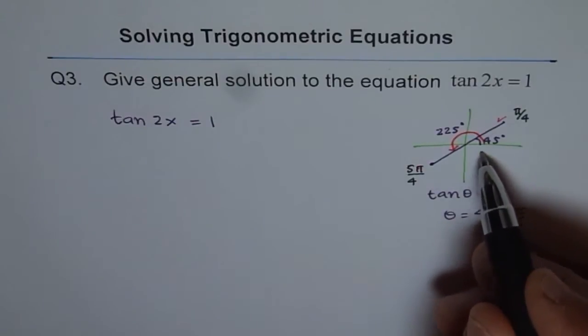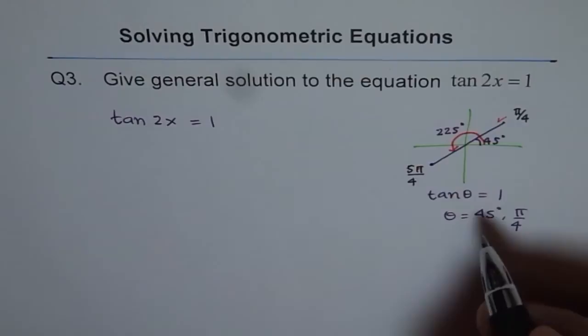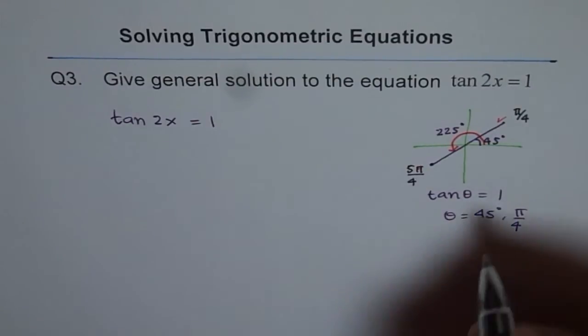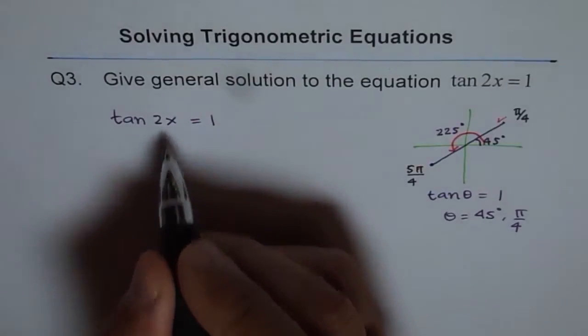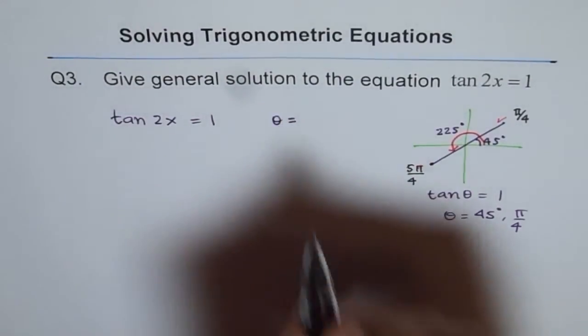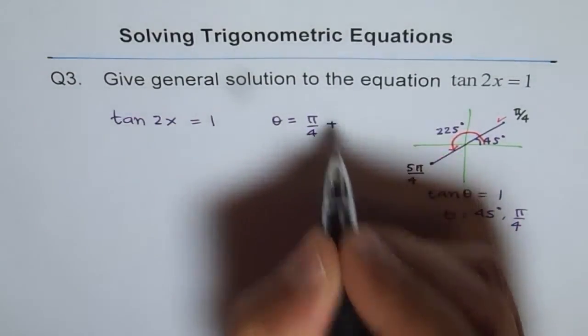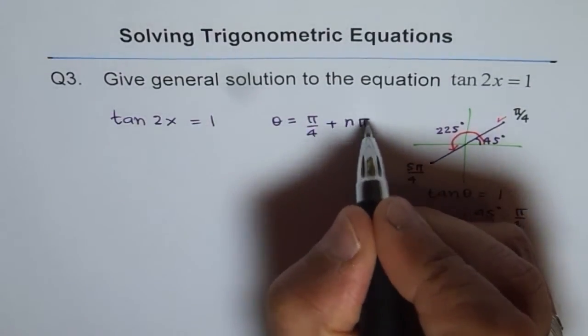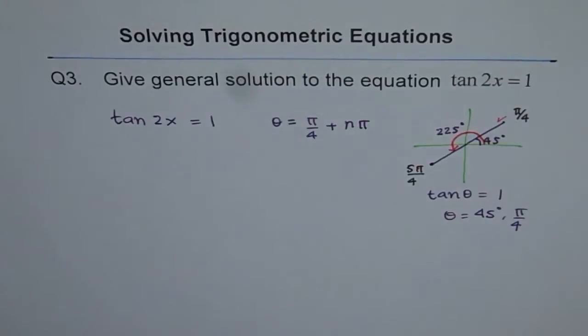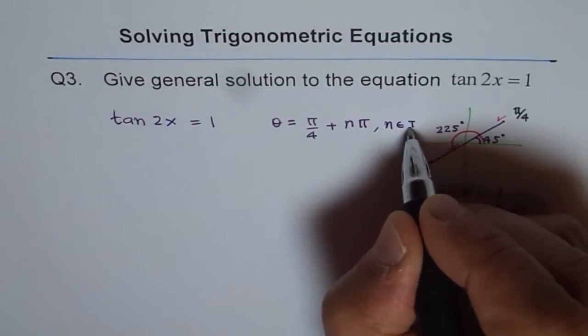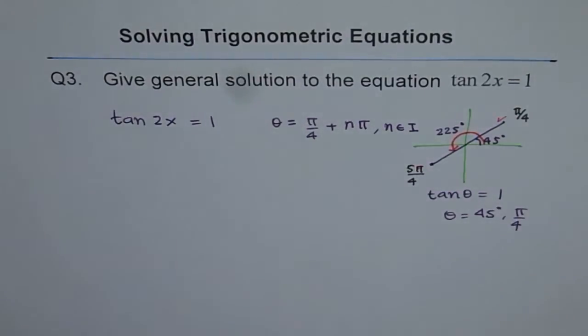So it would be plus pi, you get that. So it repeats. Therefore, in general, we could write the solution as, let me write in pi first. So general solution we could write for theta. Let me write for theta first. Let's say 2x is theta. So we'll write for theta. The general solution should be pi by 4 plus n pi, pi by 4 plus n pi, where n is any integer. So n belongs to set of integers. So we could write that as one of our solutions.